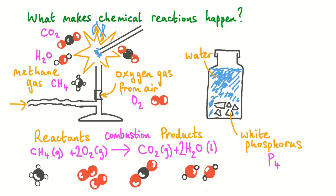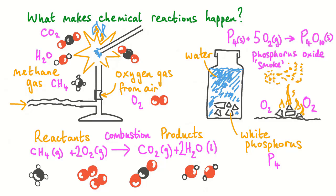We need to add a spark or a flame to get the reaction started. On the other hand, some chemical reactions seem to start all by themselves. White phosphorus is a dangerous element to leave lying around in the presence of air — it is normally stored under water. As it dries out in air, it will first smoulder and then ignite all by itself, automatically reacting with oxygen in the air to produce phosphorus oxide.